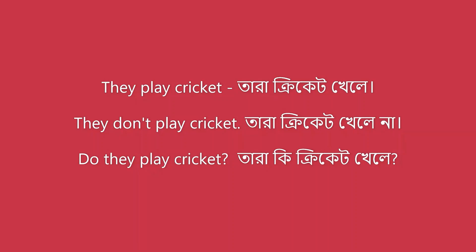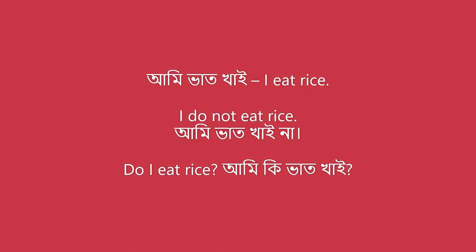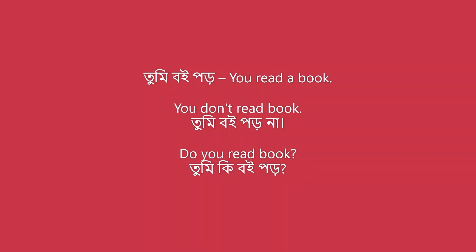Subject plus verb plus object: 'I eat rice.' Negative: 'I do not eat rice.' Question: 'Do I eat rice?' Also: 'Do you read a book?' Practice using 'do' or 'does' in negative sentences and questions.